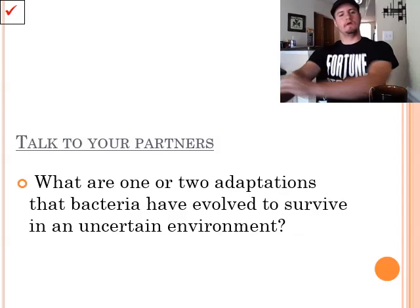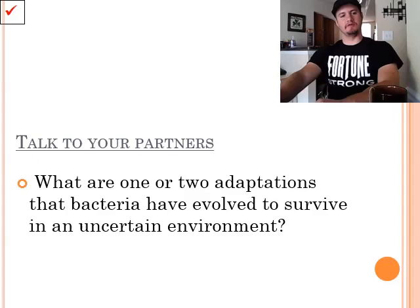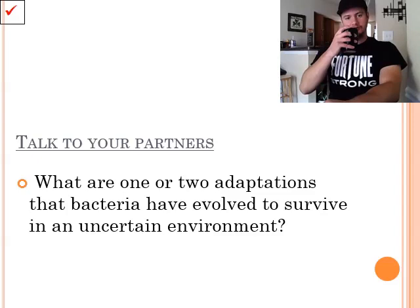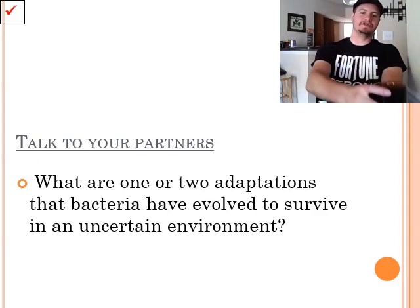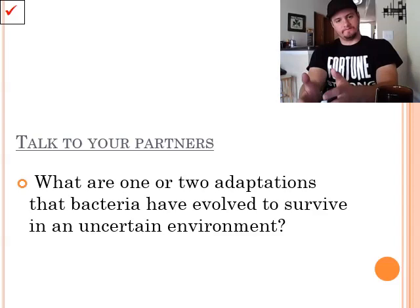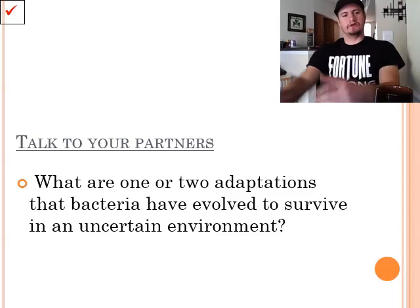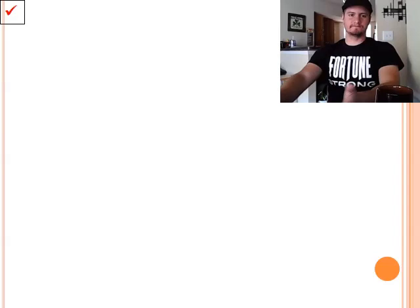So, talk with your partners. What are one or two adaptations that bacteria have evolved to survive in an uncertain environment? Go ahead. Take a little bit of time. Think about this one. I'm going to enjoy my tea. Alright. So, one or two adaptations that bacteria have evolved to survive in an uncertain environment. Think about the capsule, the cell wall, the pili. All of which help the cell survive in an area that it might not be used to yet.